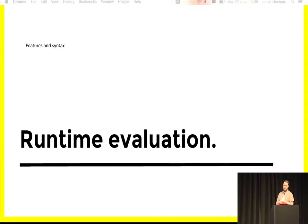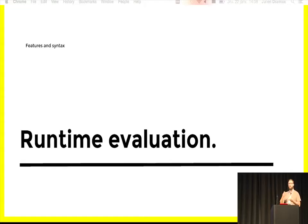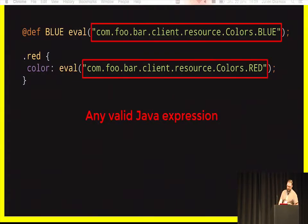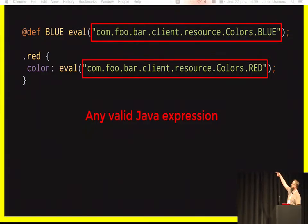Runtime evaluation: sometimes you want to inject a value into your CSS that is only known at runtime — for example, if you want to build a custom theme for your user and you only know the color when the user uses the application. To do that, you can use the eval() function, which takes a string as parameter. The string should be any valid Java expression that returns a string. You can use static constants or call static functions.